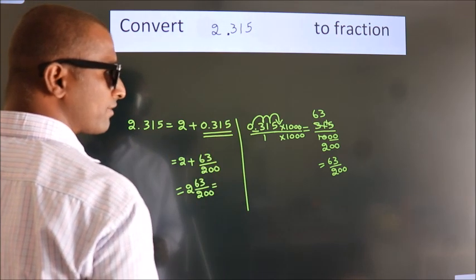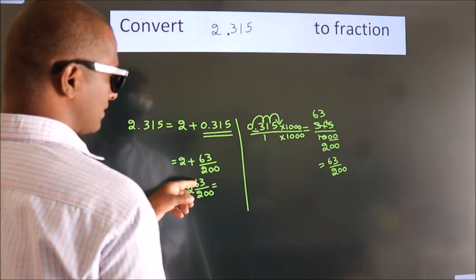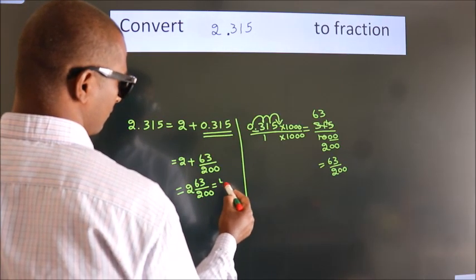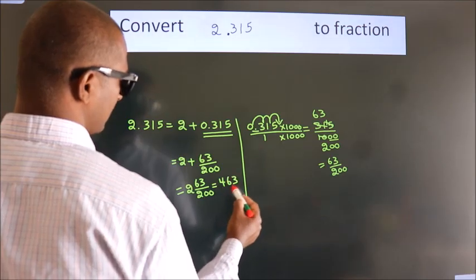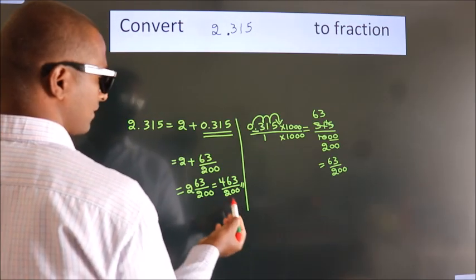And in improper fraction it is 2 into 200, 400 plus 63. 463 by 200 is our fraction.